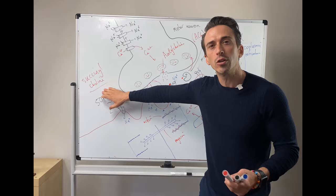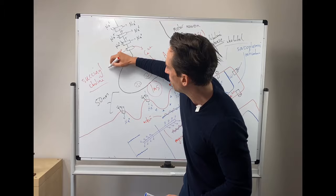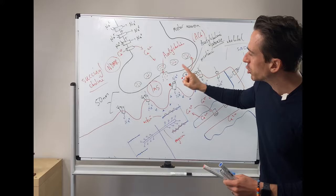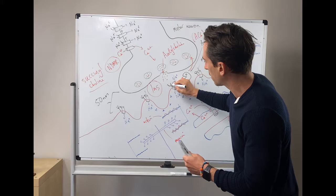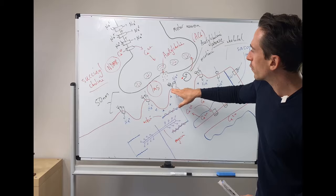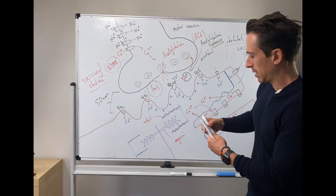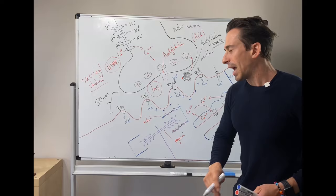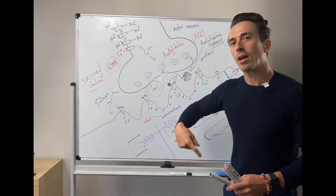There are also non-depolarizing muscle relaxants. These don't bind and cause the depolarization effect. Instead, they bind to the acetylcholine receptors and inhibit acetylcholine from binding, which means no depolarization occurs, no calcium release occurs, and no contraction occurs. To reverse these non-depolarizing muscle relaxants, there is a particular drug that can be given. What this drug does is it inhibits the acetylcholinesterases, meaning acetylcholine can now competitively bind against the non-depolarizing muscle relaxant and displace it, allowing acetylcholine to bind and the muscle to contract.